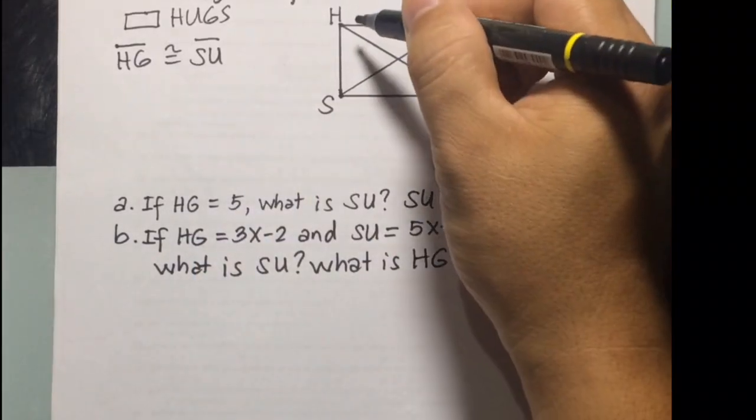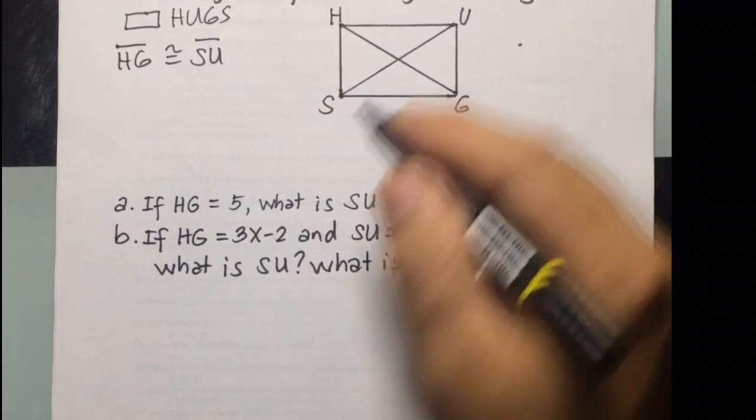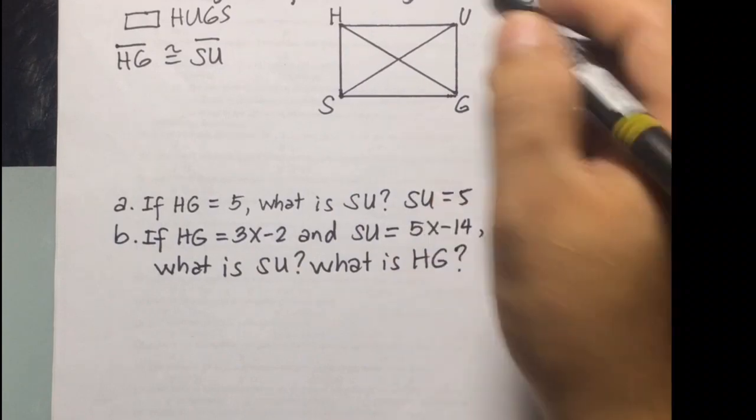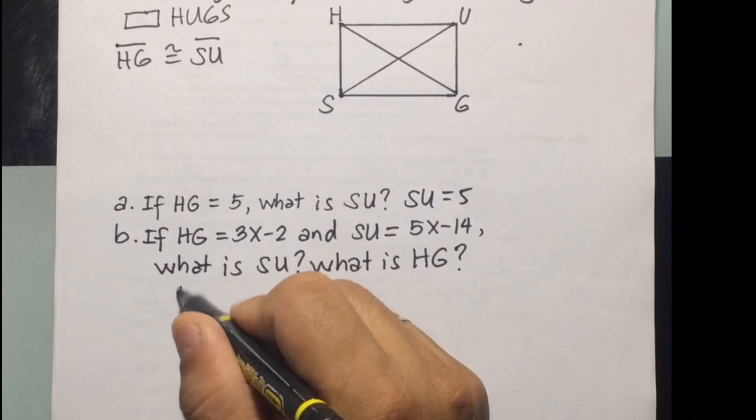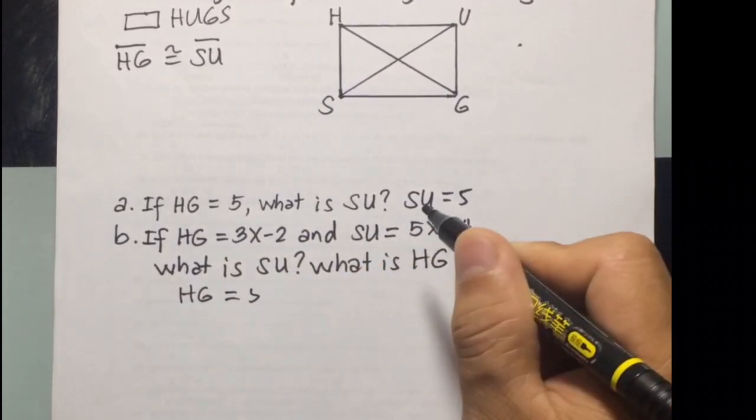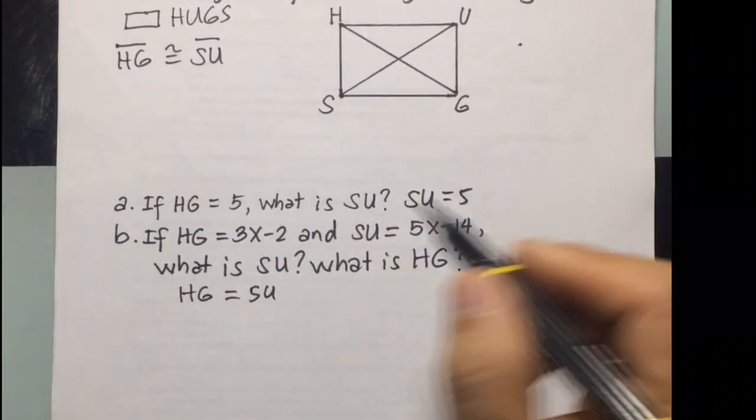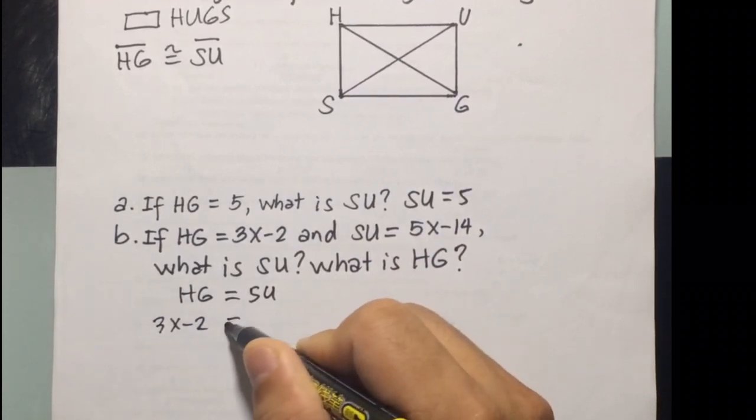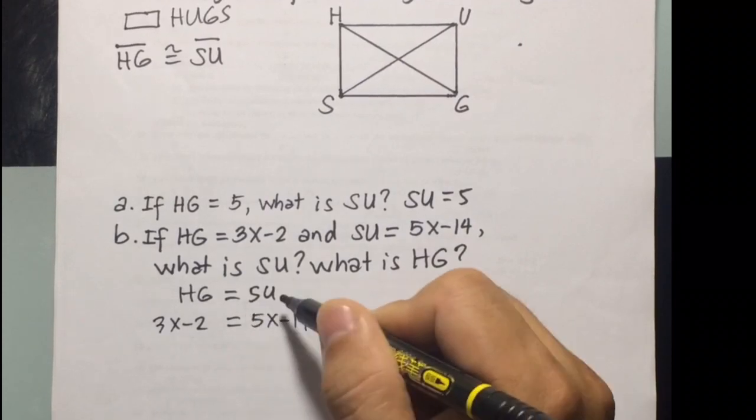Letter B. If HG is equal to 3X minus 2, and SU is 5X minus 14, what is SU and what is HG? Since the two are congruent or they have the same measurement, we can say that HG will be equal to SU, and HG is 3X minus 2. So, this will be equal to 5X minus 14, the value of SU.